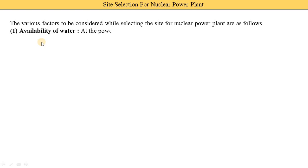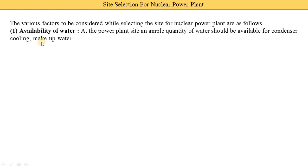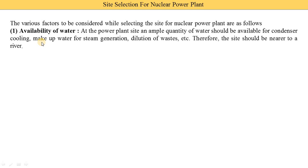The first factor is availability of water. In a nuclear power plant, water is required for different purposes. We require an ample quantity of water at the site. Water is required for condenser cooling. The condenser is a type of heat exchanger in which steam is converted into water. When steam is converted into water, we require some other medium, so we use cooling water.